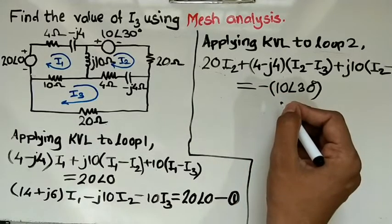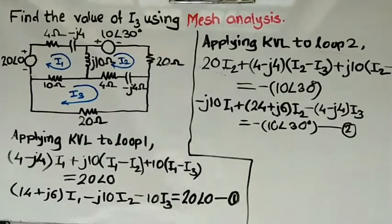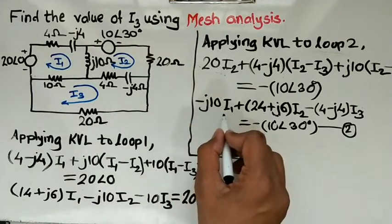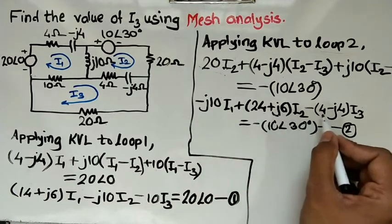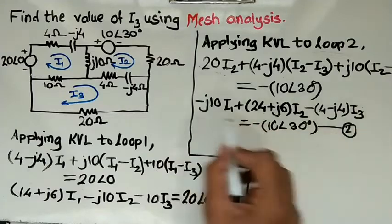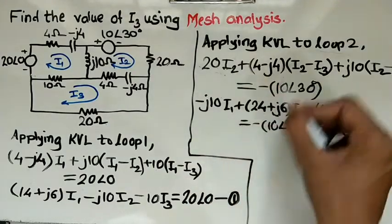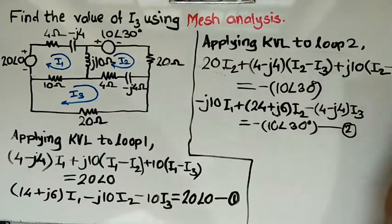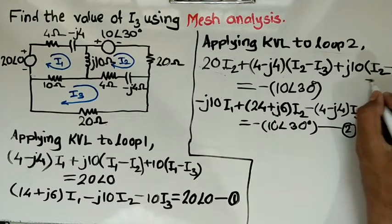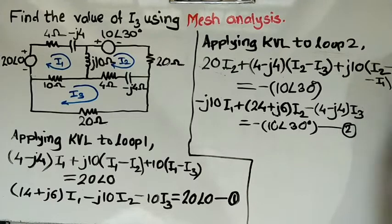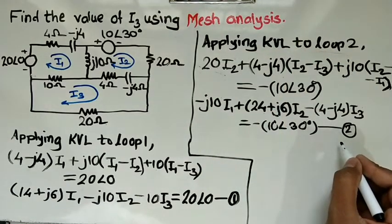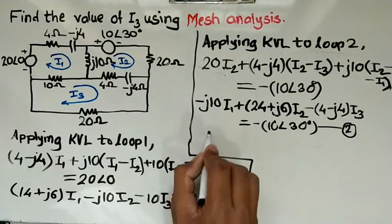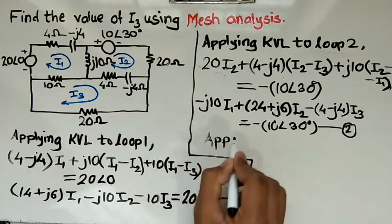After simplifying Loop 2, separating all I1, I2, and I3 terms, we get: (−j10)·I1 + (24 + j6)·I2 + (−4 + j4)·I3 = −10∠30°. This is equation number two.